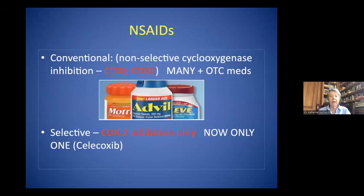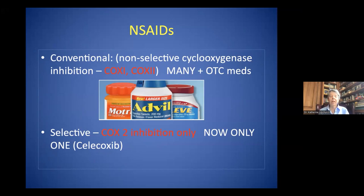Non-steroidal anti-inflammatory drugs, otherwise known as NSAIDs, are conventional non-selective or selective. Conventional is the original broader class — a non-selective cyclooxygenase inhibitor — and these include many different drugs, many of which are also available in low doses over-the-counter.